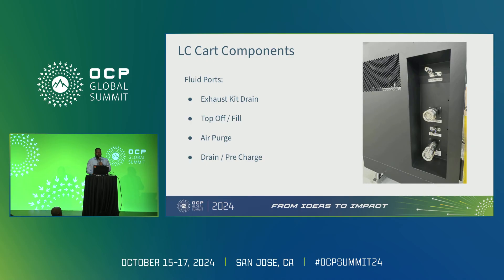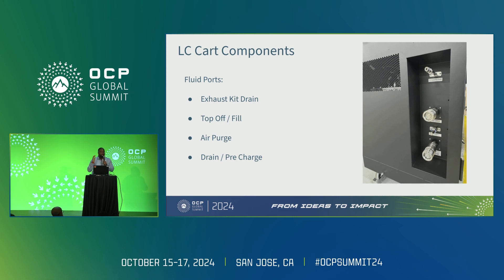To conduct the different fluid operations, there are several ports on the side of the cart. At the very top is the exhaust kit drain — the exhaust kit bleeds out air inside the RPU during fill or drain operations, and this port drains any fluid caught inside it. We also have the top-off and fill port, which sends fluid from the cart into the rack; an air purge port where you attach the compressed air hose; and the drain and pre-charge port for drain operations or loading fluid from outside into the cart.